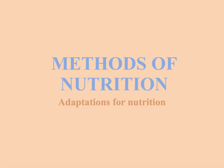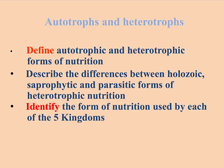In this video we're going to discuss how different types of organisms have adapted their mode of nutrition through evolution to fit their niche. First of all you should be able to define what's meant by autotrophic and heterotrophic forms of nutrition. And then we're going to go on and you should be able to describe the differences between the different forms of heterotrophic nutrition such as holozoic, saprophytic and parasitic forms of nutrition.